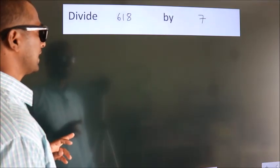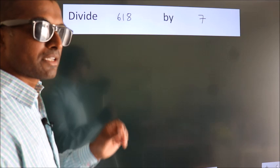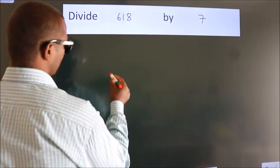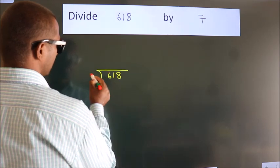Divide 618 by 7. To do this division, we should frame it in this way. 618 here, 7 here.